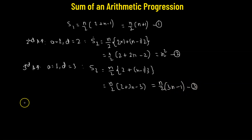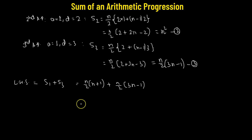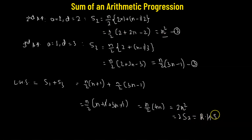Now let's start from the left-hand side and add S1 plus S3. S1 equals n over 2 multiplied by n plus 1, and S3 equals n over 2 multiplied by 3n minus 1. Taking n over 2 as the common factor, we get n over 2 multiplied by n plus 1 plus 3n minus 1. The positive 1 and negative 1 cancel, and 3n plus n gives 4n, so we have n over 2 times 4n, which equals 2n squared. Since n squared is our S2, this equals 2 times S2. Hence, we have successfully shown that S1 plus S3 equals 2 times S2.